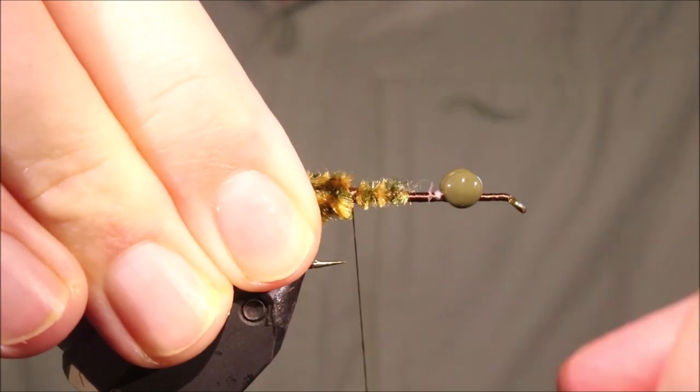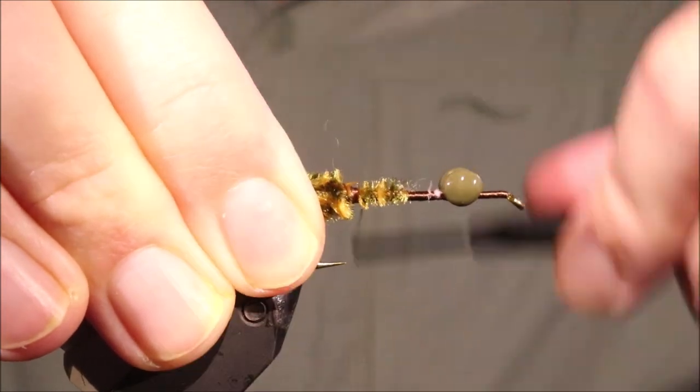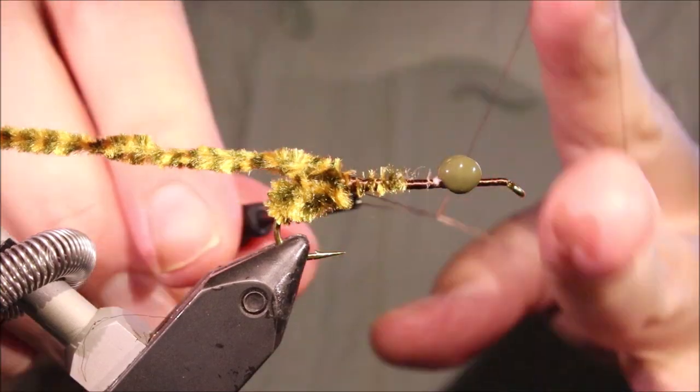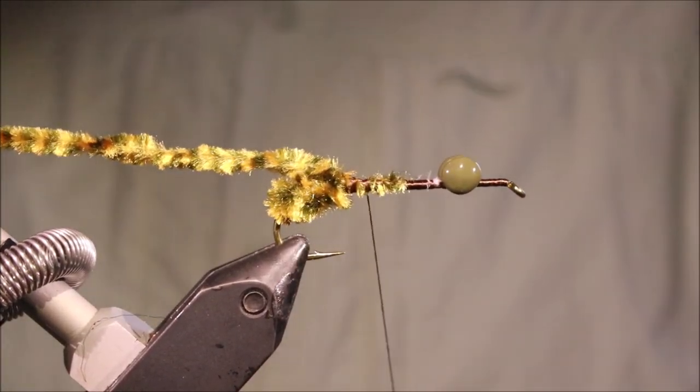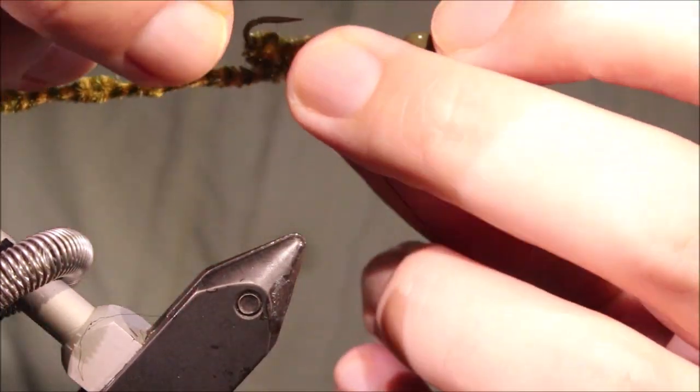Fold it back, tie over it. Then I'll throw a half hitch because I'm going to take the hook out of the vise, I'm going to thread on my claw.